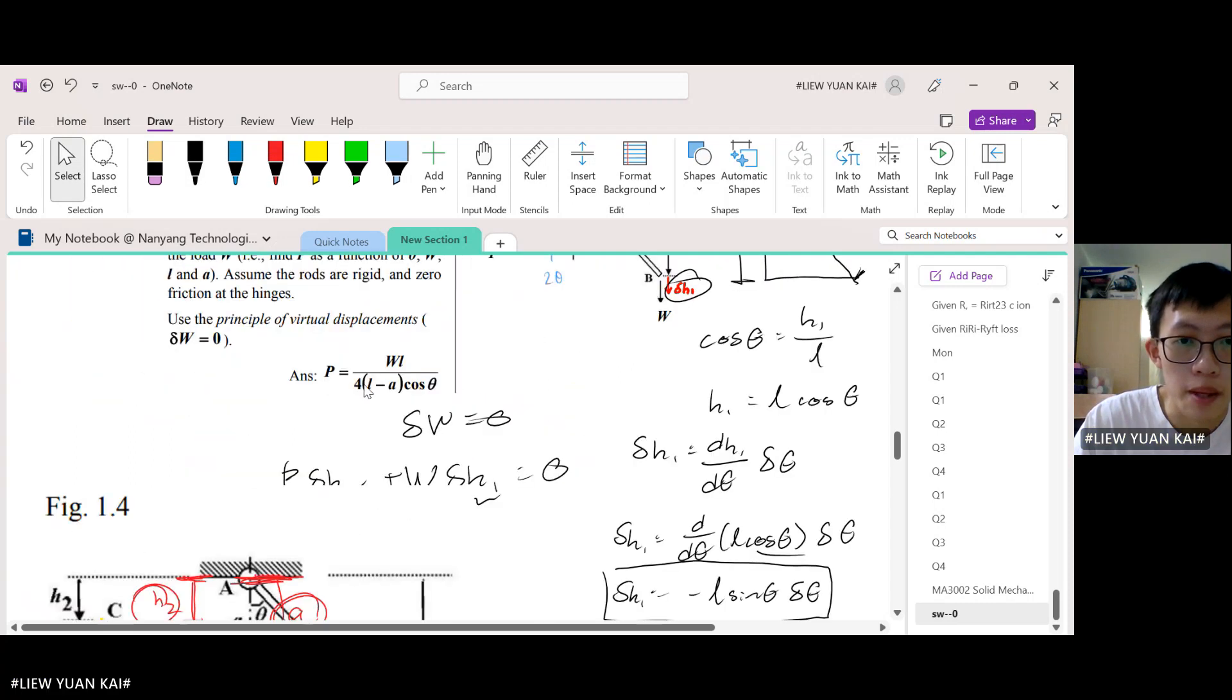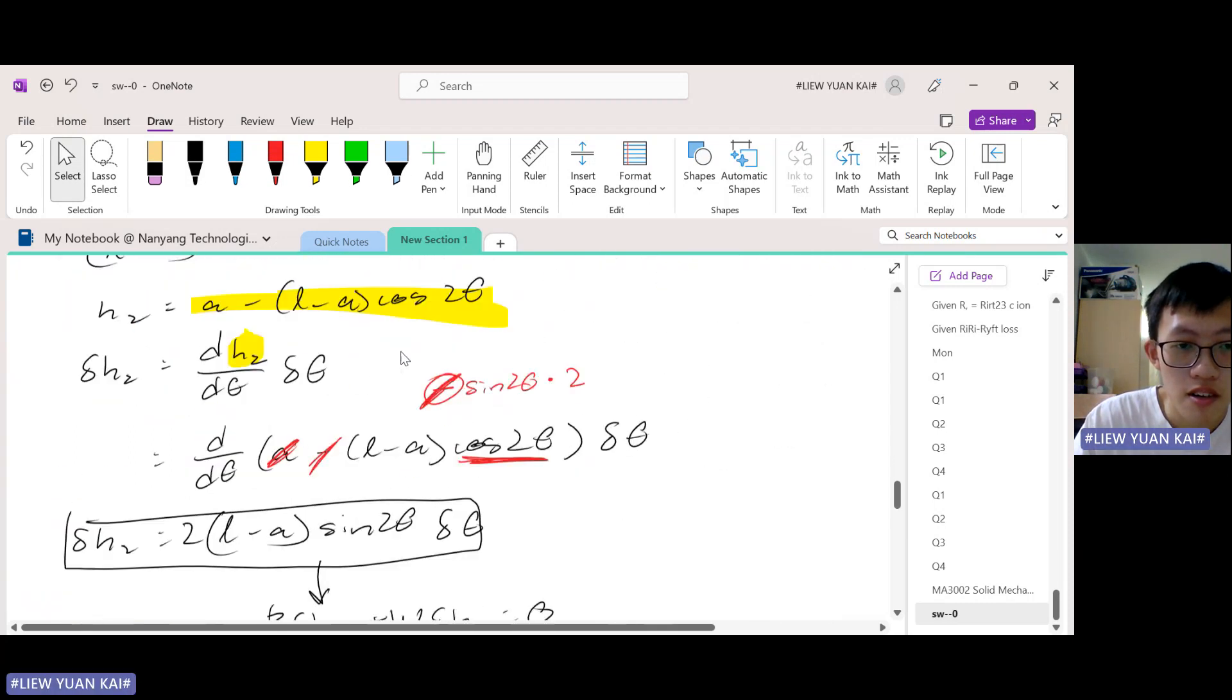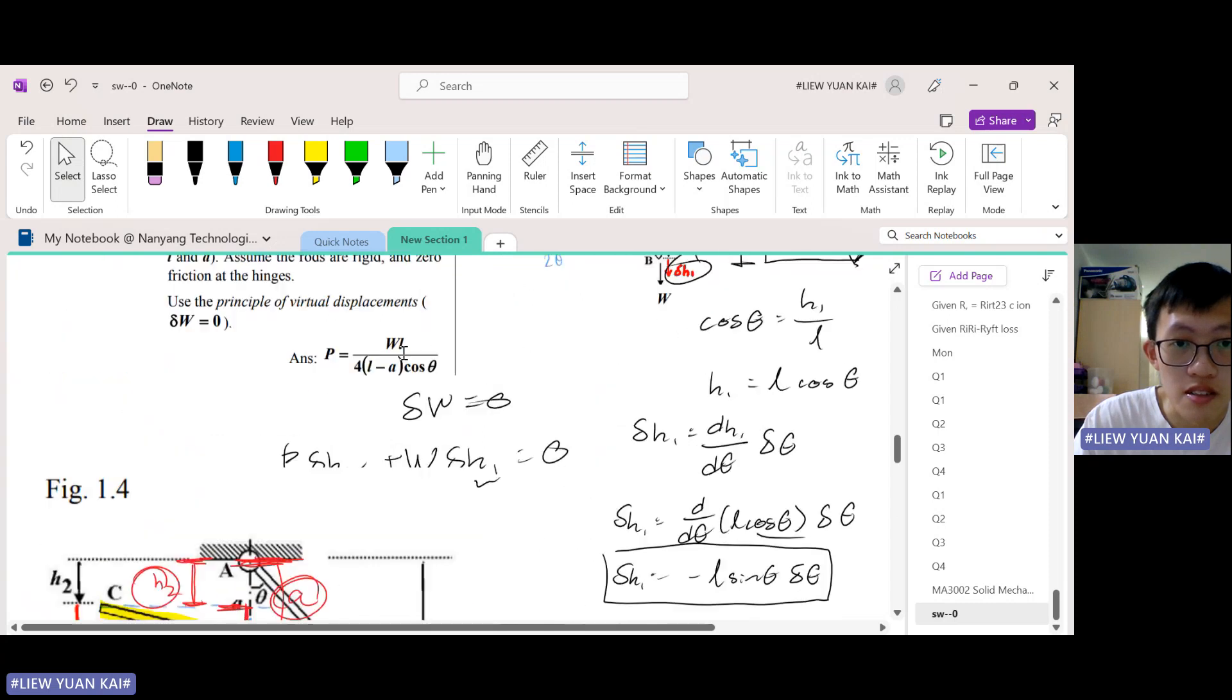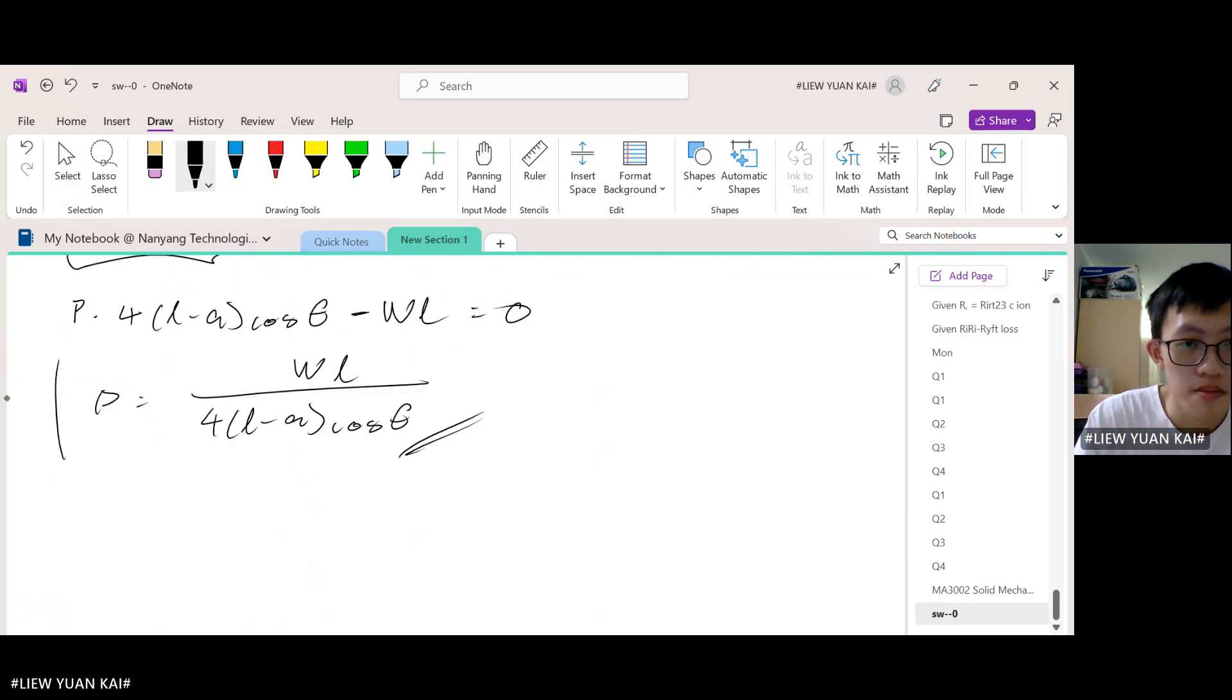Let me check if this is the answer. Yep, WL / [4(L minus A) cosine theta]. Yep, so this is the answer.